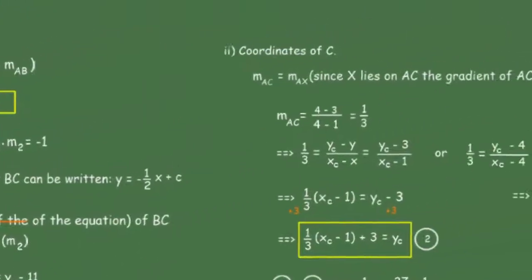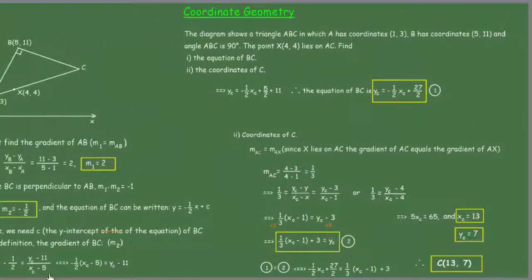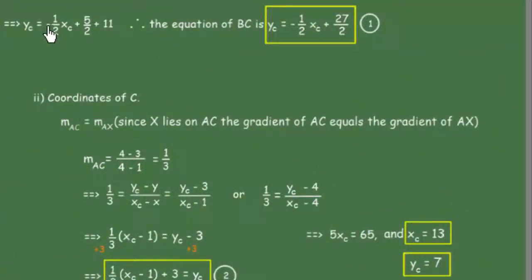We can write y_C in terms of x_C by passing 11 to the other side. We'll have y_C = -1/2x_C + 5/2 + 11. Therefore, the equation of BC is y = -1/2x + 27/2. We will call this equation 1.